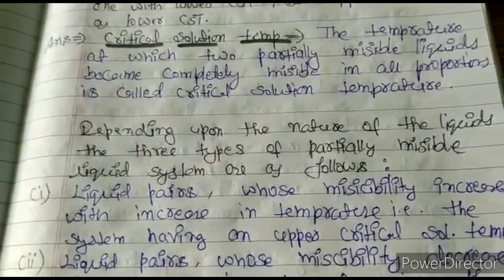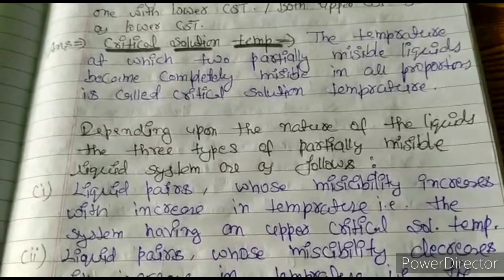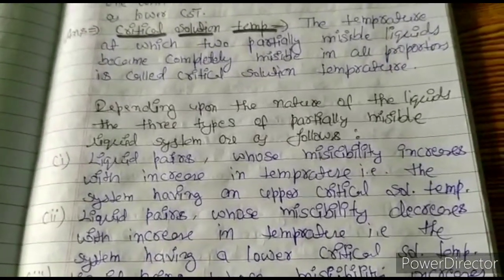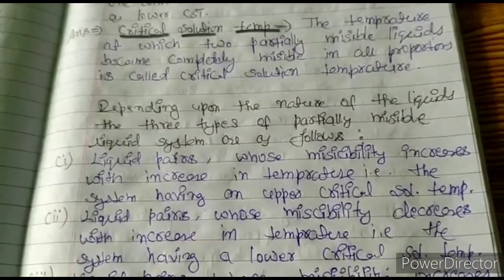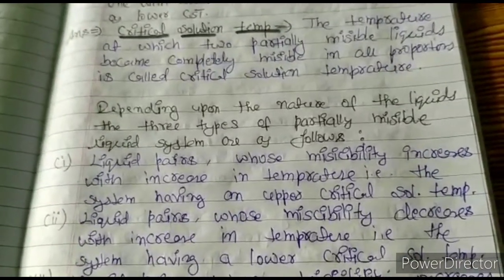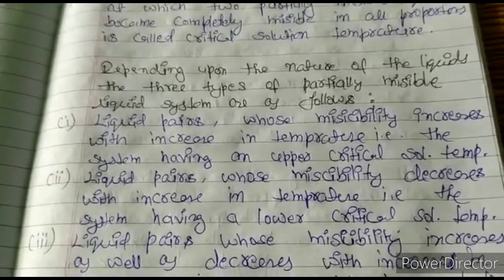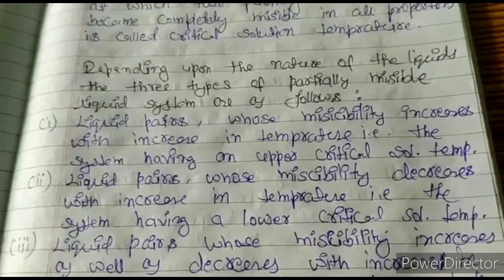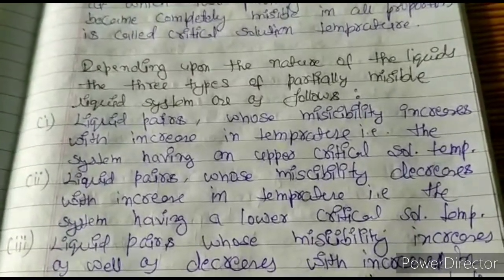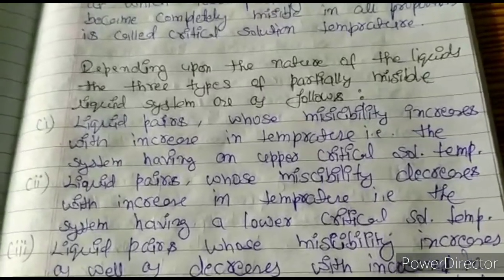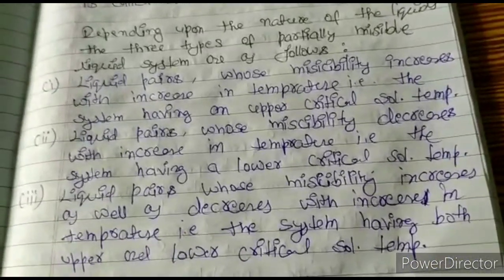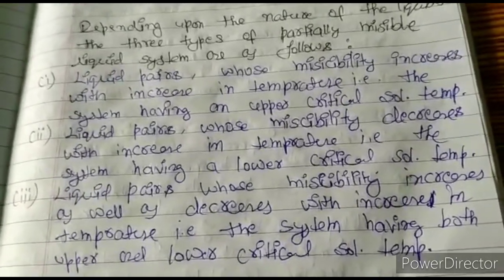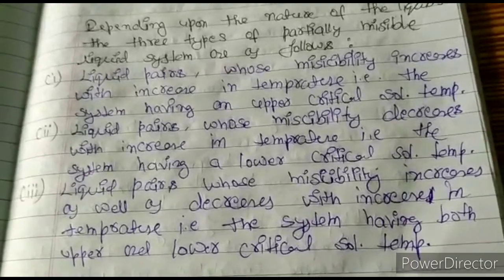Depending upon the nature of the liquids, there are three types of partially miscible liquid systems. First, liquid pairs whose miscibility increases with increase in temperature — that is, systems having an upper critical solution temperature. Second, liquid pairs whose miscibility decreases with increase in temperature — that is, systems having a lower critical solution temperature. Third, liquid pairs whose miscibility both increases and decreases with temperature — having both upper and lower critical solution temperature.